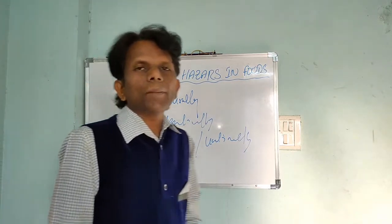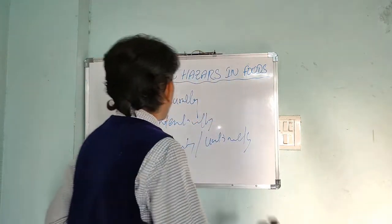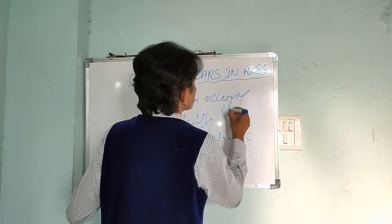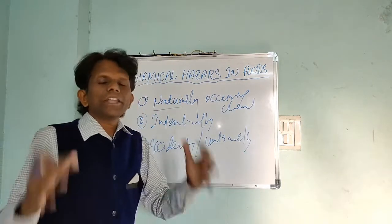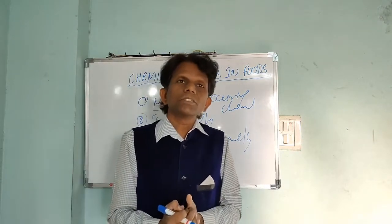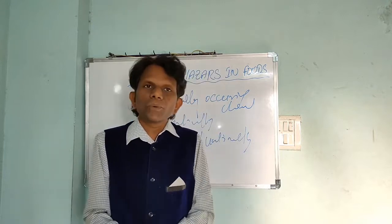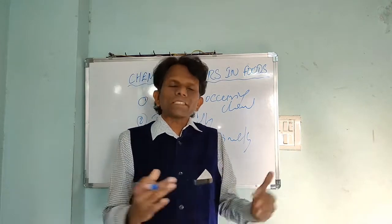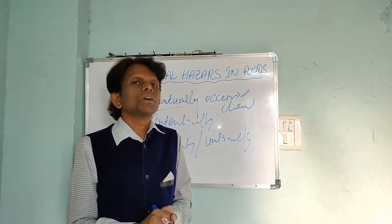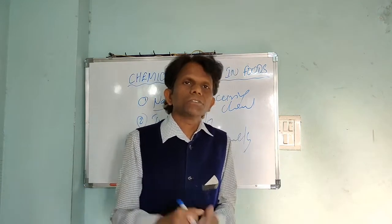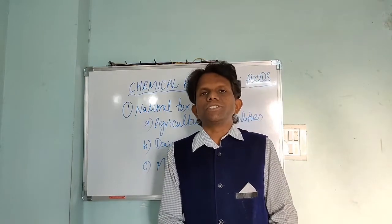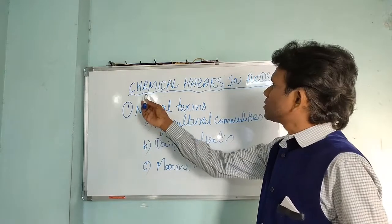Let us discuss about Naturally Occurring Chemicals. These are the toxins — natural toxins which are present in the food by the action of nature or environment. The toxins will produce without relation to human activity. Those are called Natural Toxins.